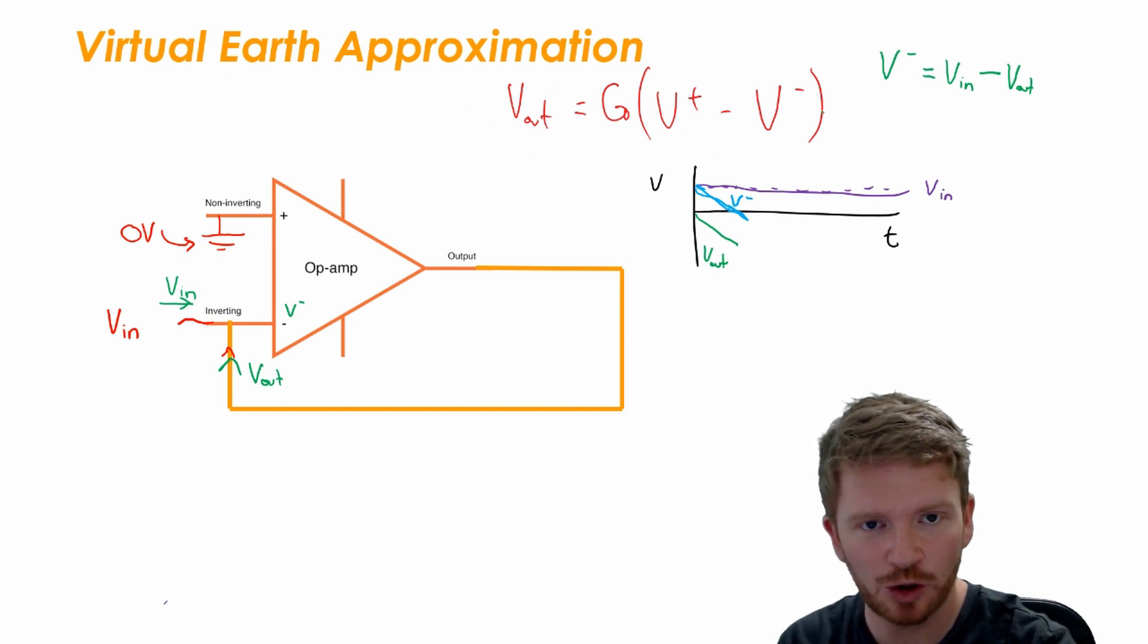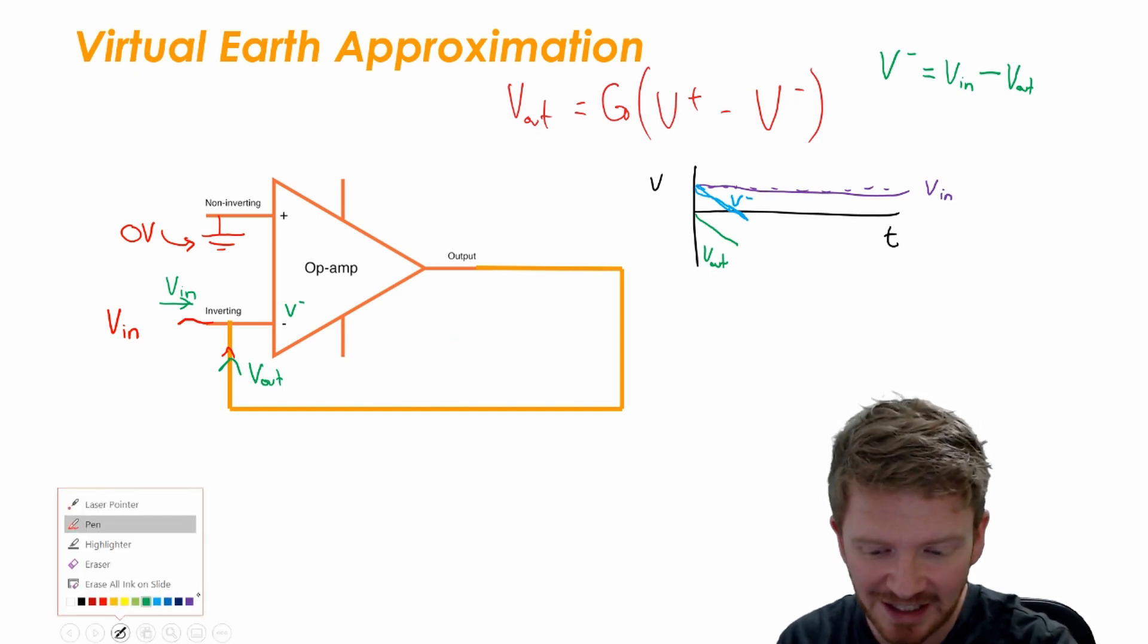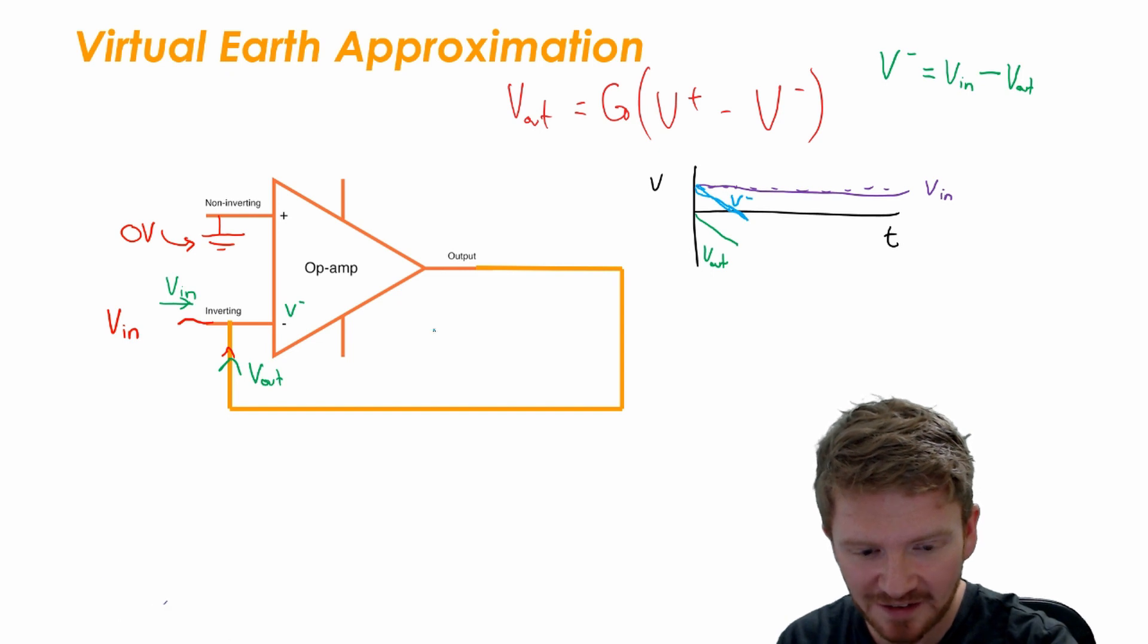What happens when V_inverting, the inverting voltage, becomes smaller than zero? But when it's smaller than zero I'm gonna have in my open loop gain equation zero take away a negative voltage. Minus minus minus becomes a positive, so V_out is going to want to go positive.